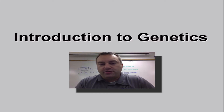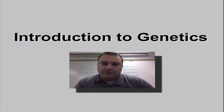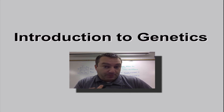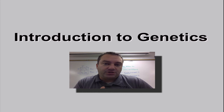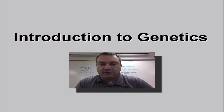Welcome to our first episode from chapter 11. Chapter 11 is going to be one of our toughest chapters this year because it's the beginning of our study of genetics. In this chapter you're going to learn about meiosis, which is a type of cell division that will create sex cells, which we use to make new offspring in sexual reproduction.